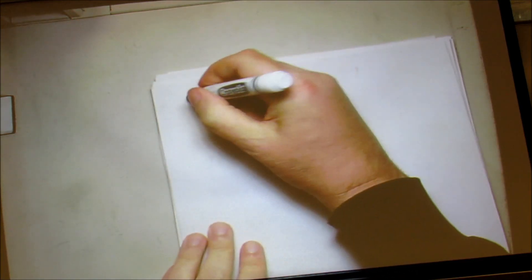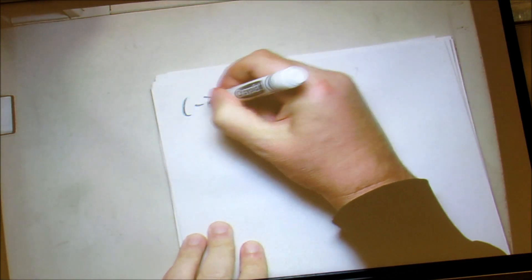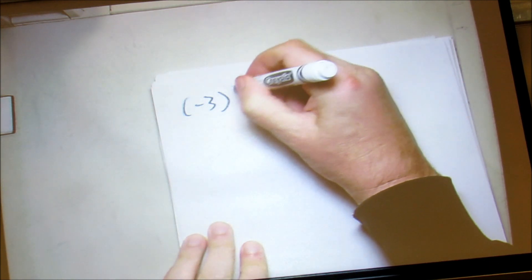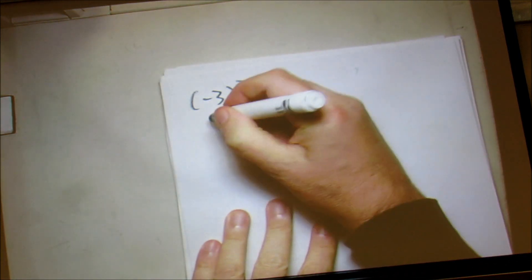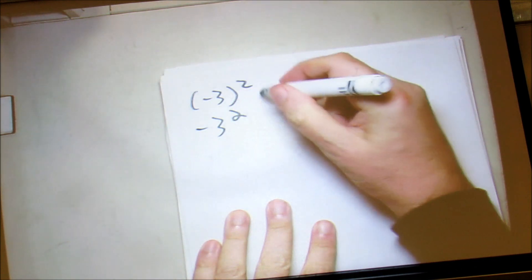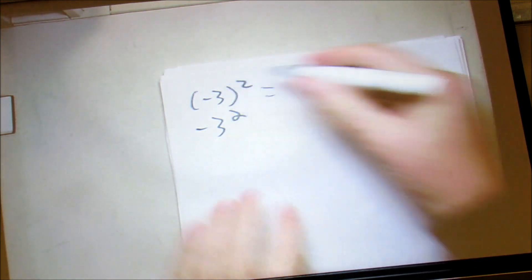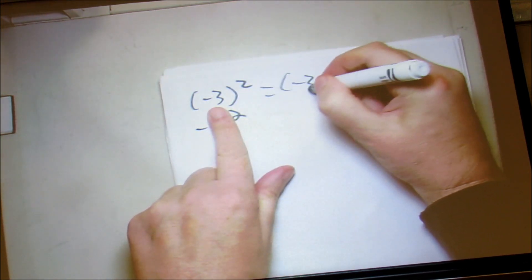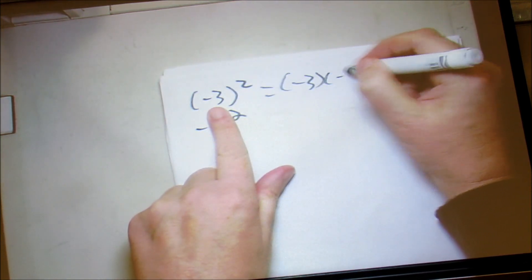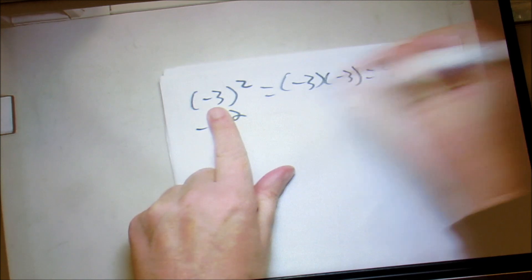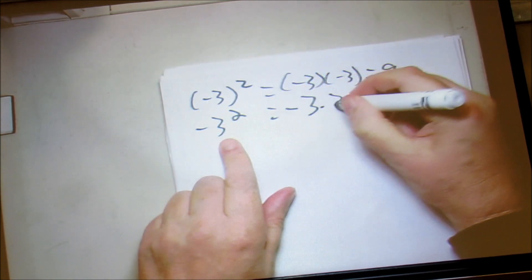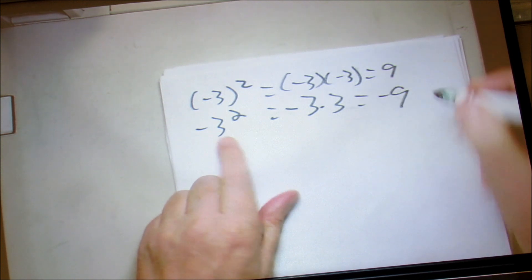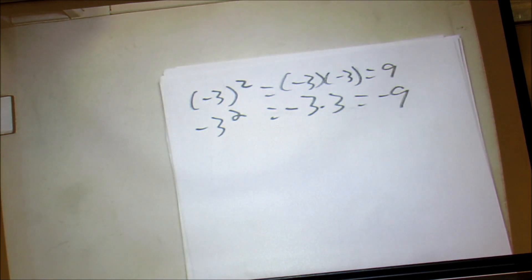You have to know the difference between negative 3 squared, where the negative 3 is in parentheses, and negative 3 squared without parentheses. The first one is negative 3 times negative 3, which equals 9. The second one is negative 3 times 3, which is negative 9. Make sure you know the difference between the two.